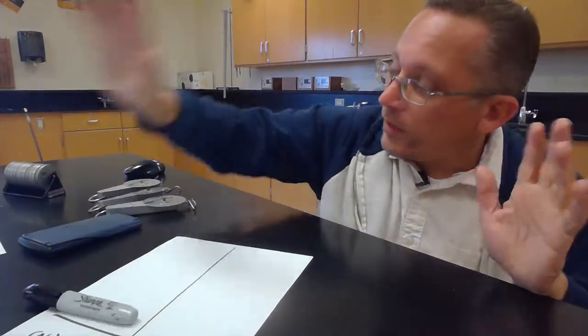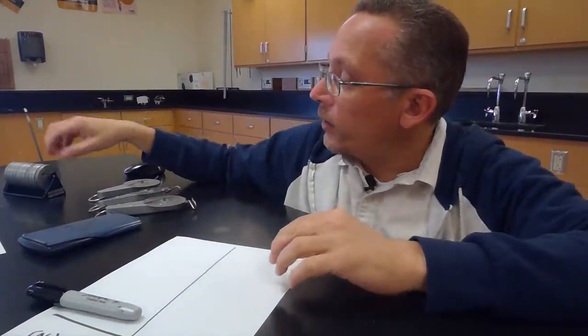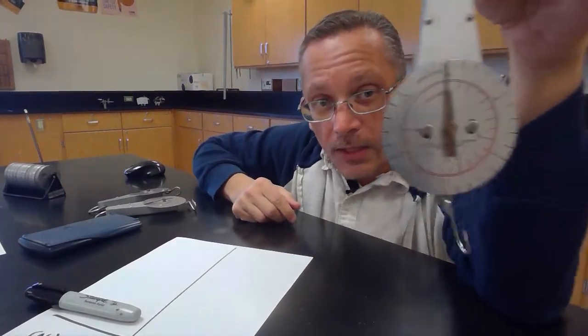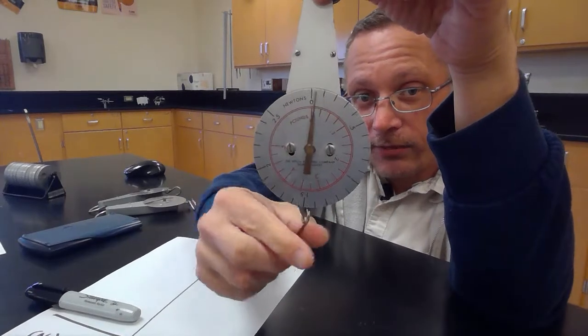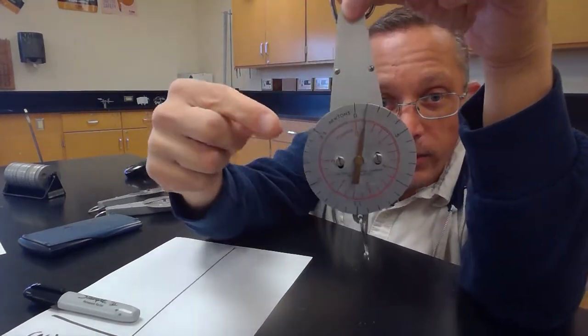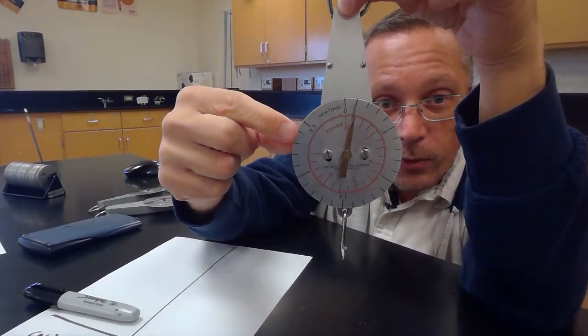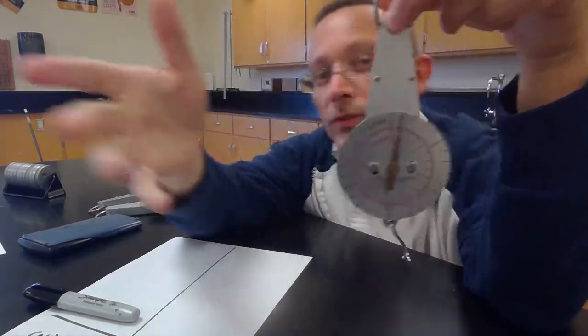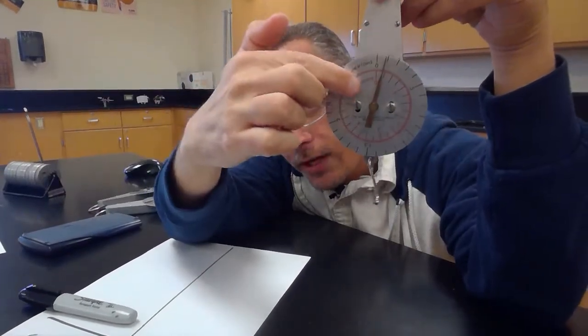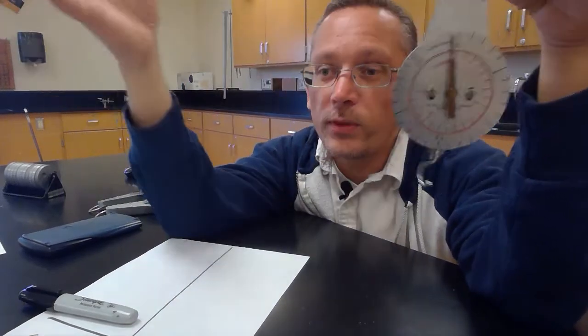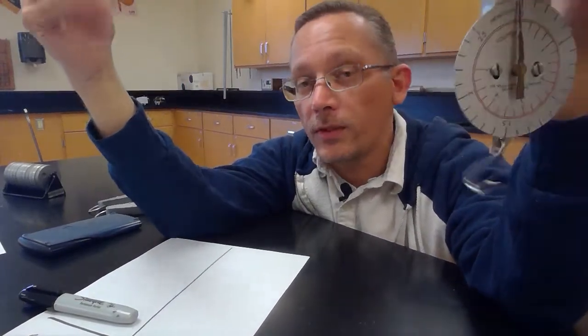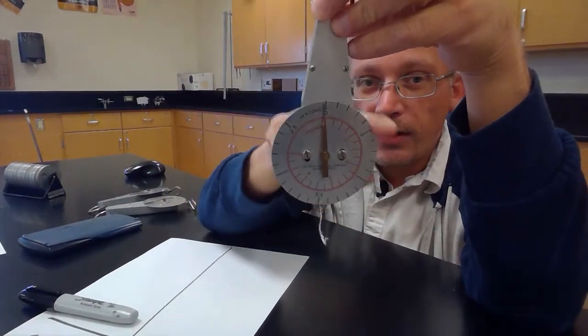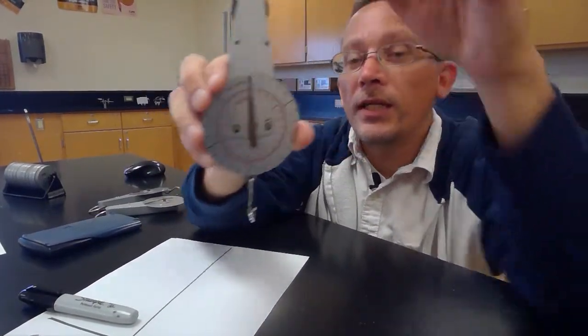So to that end what I've got here is I've got three spring scales, and on the spring scale I can hang different weights on here, and you'll notice it's got a scale here that tells me the force. In the outside ring it'll tell me the force in newtons, which is what I want, and the red ring in the middle it'll tell me in pounds, which is not what I'm looking for because this is science and we use the metric system. So I'm going to use the black outside ring with the numbers in newtons.